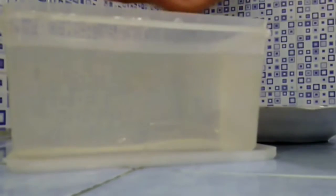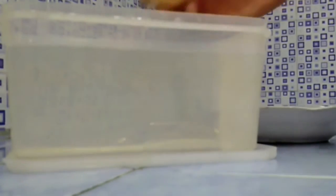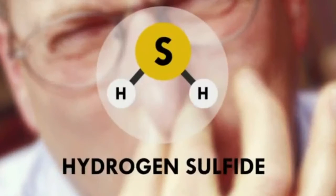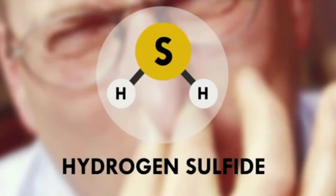Bad eggs are already porous, and this allows bacteria to come into the egg. This will make the egg produce a stinky gas called hydrogen sulfide.